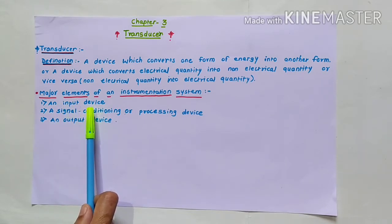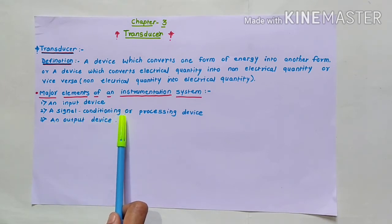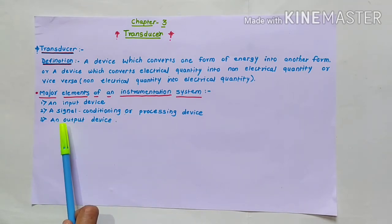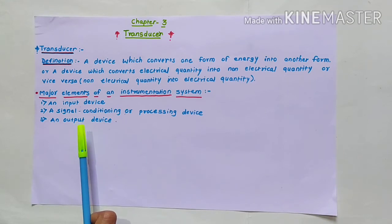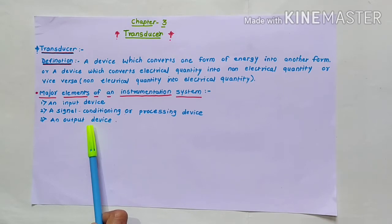The signal conditioning device is used to amplify, filter, or otherwise modify the signal to a format acceptable to the output device — for example, different types of amplifiers, modulators, filters, analog-to-digital or digital-to-analog converters, etc. The output device may be a simple indicating meter like a DMM or panel meter, a magnetic tape recorder, a digital computer, and so on.